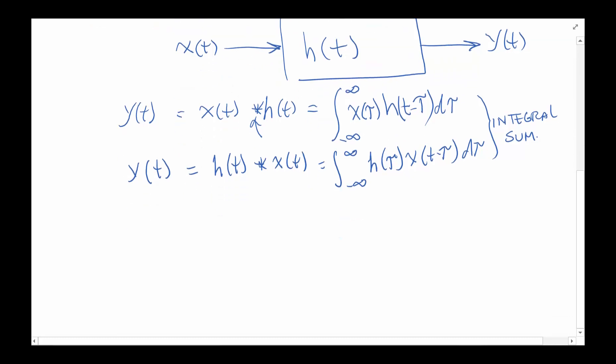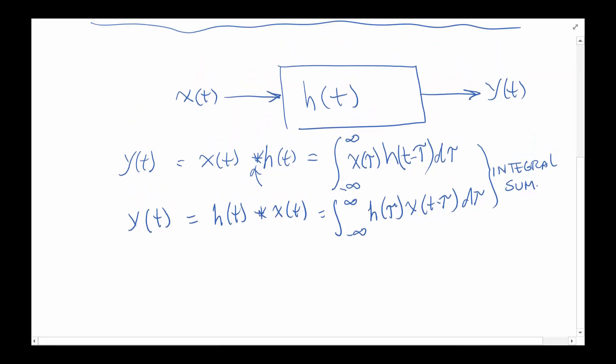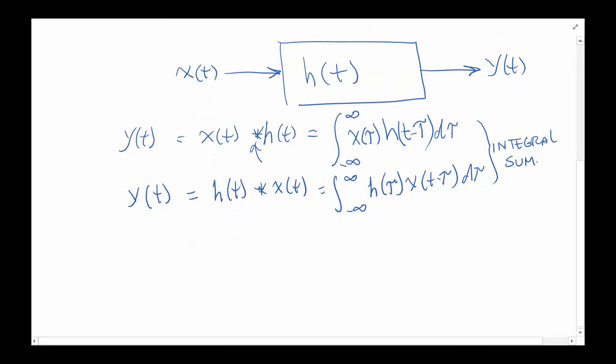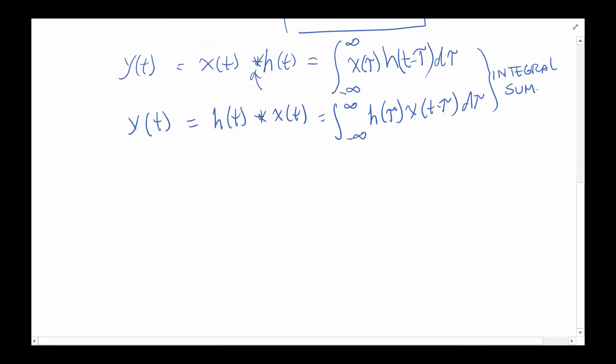You basically decide which is easier to shift: X(t) or H(t), and use the appropriate one for what you need to do. This is very handy for us, rather than having to know what's in the system, we have the impulse response of the function or the system, and then we can find the output from the input.